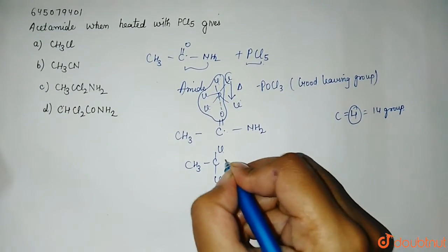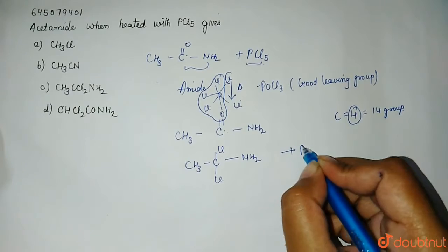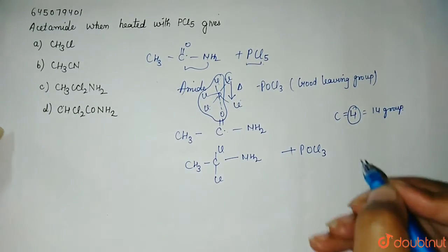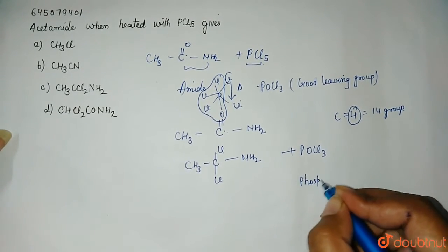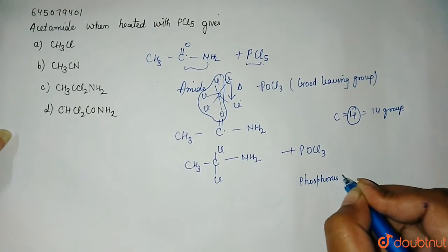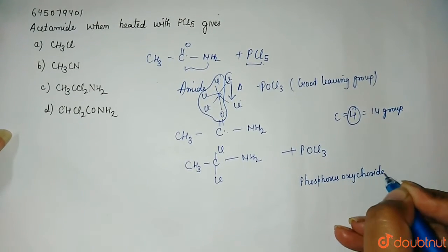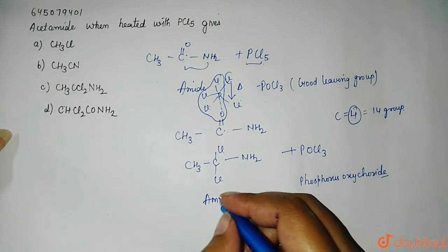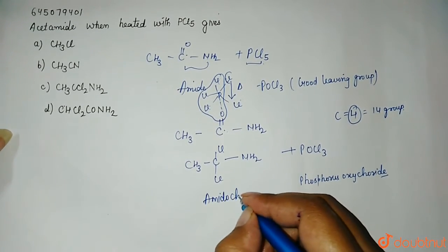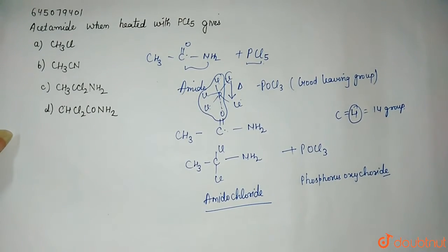Like this and this is the complete structure which you will get and POCl3 which is also known as phosphorus oxychloride will get removed and this is your amidochloride will form by PCl5 on heating.